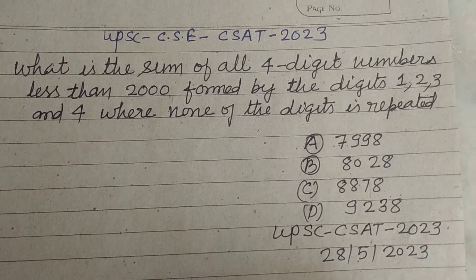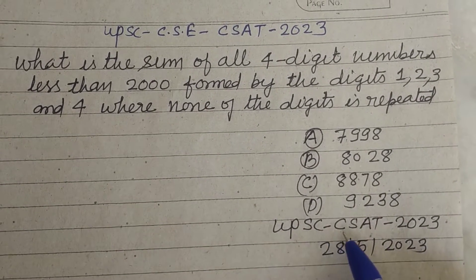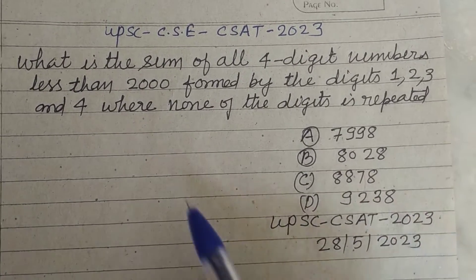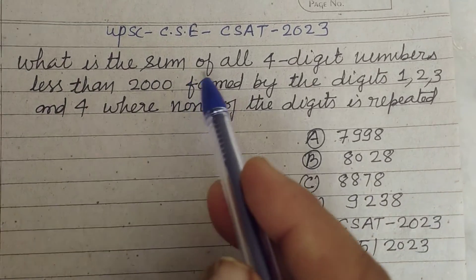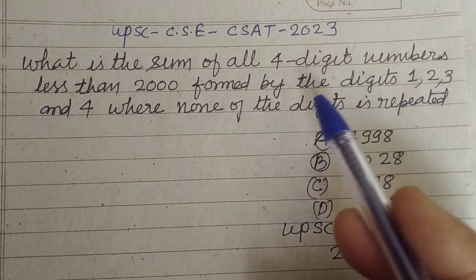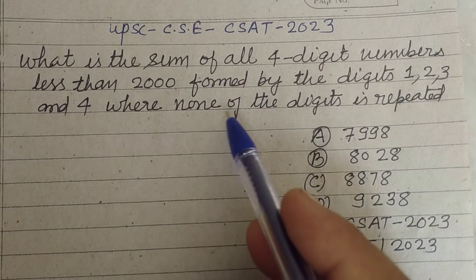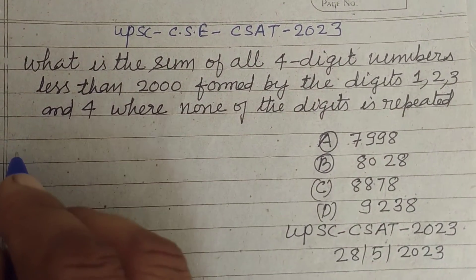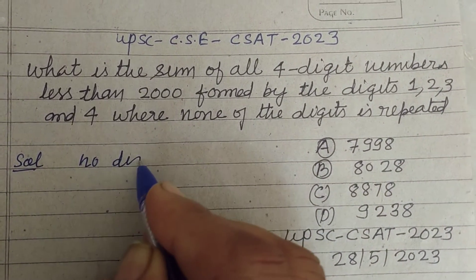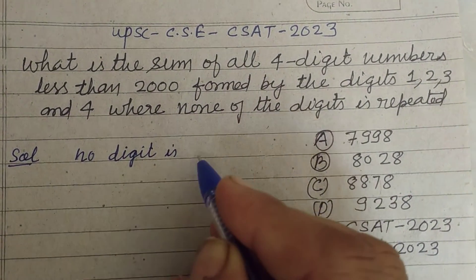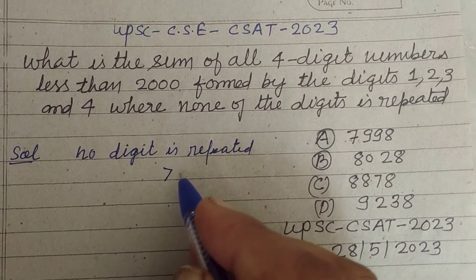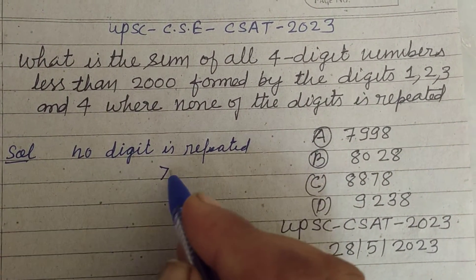Hello viewer, warm welcome to this YouTube channel. UPSC CSET 2023, held on 28 May 2023. What is the sum of all four-digit numbers less than 2000 formed by the digits 1, 2, 3, and 4, where none of the digits is repeated? So here it is given: no digit is repeated and the number formed is less than 2000.